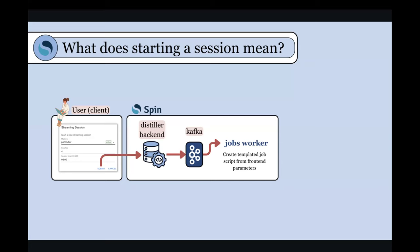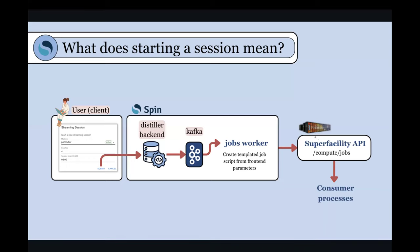And it creates an event at the same time. That event is sent through our Kafka system to workers that are listening on the jobs topics. So the jobs worker is just waiting for new jobs to show up. And then this jobs worker, depending on the parameters that are given in the front end, will create this templated job script. And then it'll send a request to the super facility API to start up a job. And that job is just the consumer processes that we've developed for bringing up ZeroMQ sockets to receive data and then consume the data as it comes in.